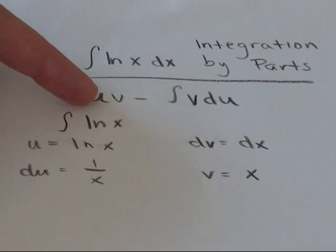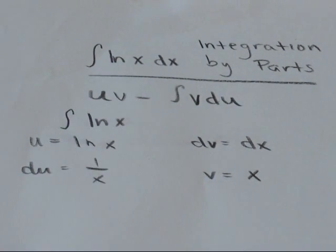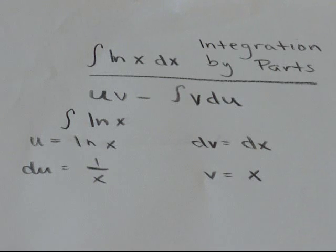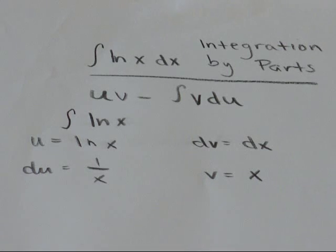We're going to use the formula uv minus the integral of vdu. The first thing to do is figure out what to let u equal and what to let dv equal. A good rule to remember is anytime you see log x in your integral, always let that equal u.